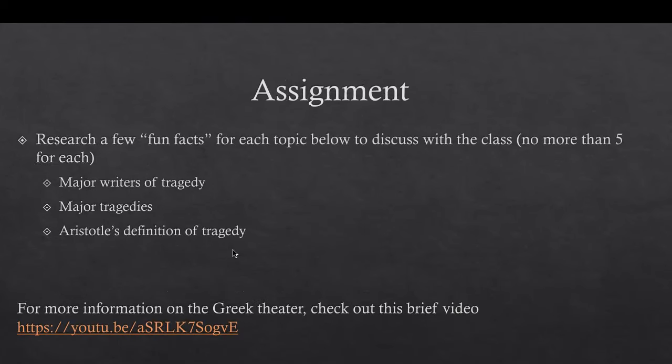For your assignment for the next class, I want you to research a few fun facts for each topic below to discuss with the class. You'll get some points for it — you don't have to do more than five for each. Find facts that you think your classmates aren't going to find. Look into the major writers of tragedy — the three playwrights I mentioned — and see what you can find about their plays. Choose one or two major tragedies and find something to share with the class. Also look up Aristotle's definition of tragedy and pick out one or two aspects worth discussing. If you want more information on the Greek theater, check out the YouTube video linked here.